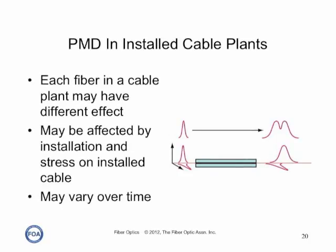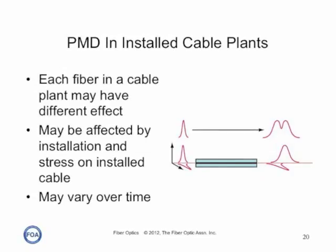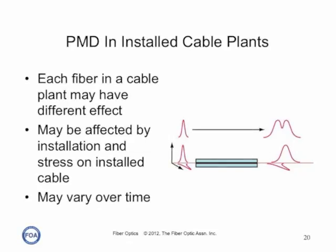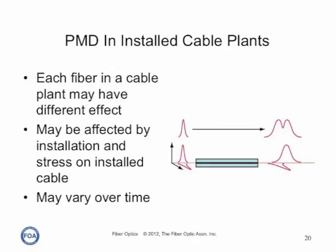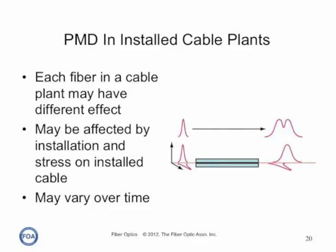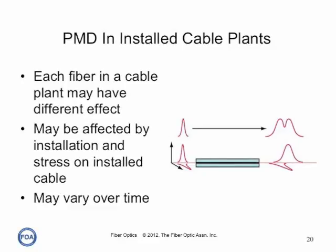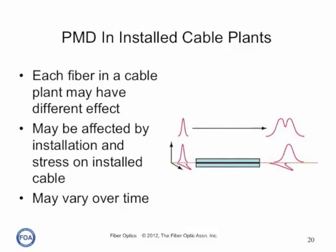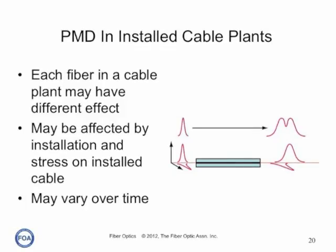PMD is a complex issue in an installed fiber optic cable plant. In a long concatenated fiber optic cable, each fiber can have different waveguide and material birefringence characteristics, caused by the random characteristics of each fiber in the link and the variations of the stress on the cable. PMD is an important issue as data rates increase from 10 to 40 to 100 gigabits per second and faster. Unfortunately, there are no reliable compensation schemes for PMD, so the only solution is to test links to be upgraded for PMD using one or more of the standardized test methods.